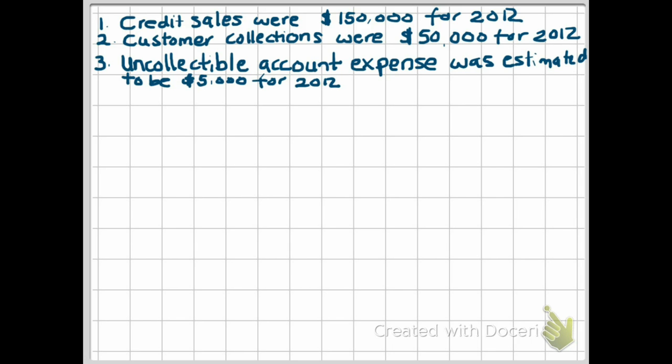Let's take a look at this example. Credit sales for the company were $150,000 for 2012. Customer collections were $50,000 for 2012. And uncollectible account expense is estimated to be $5,000 for 2012.